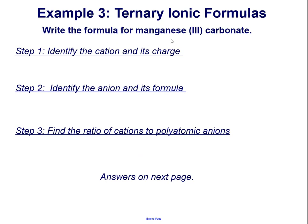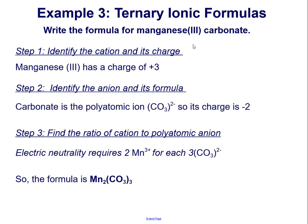Example 3: write the formula for manganese(3) carbonate. Follow the three steps: identify the cation and its charge, identify the anion and its formula, and find the ratio of cations to polyatomic ions. The cation is manganese(3) and has a charge of positive 3. Carbonate is the polyatomic ion CO3, and its charge is negative 2. Electric neutrality requires two manganese ions for every three carbonate ions. So the formula is Mn2(CO3)3.